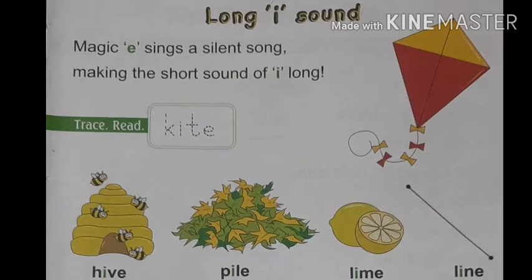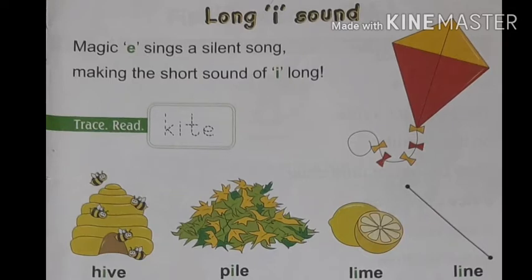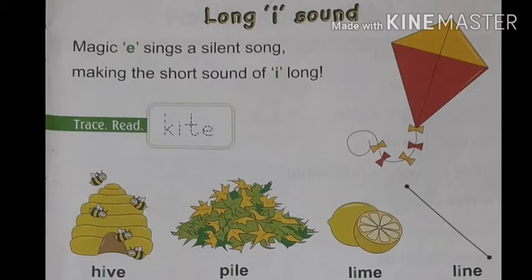Long I sound words can be made in English. E letter at the end means add. Okay, when we add the E letter and pronounce it, it will be silent.